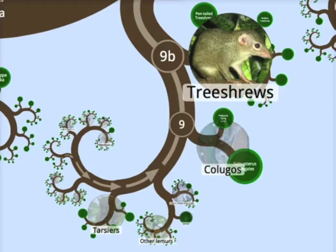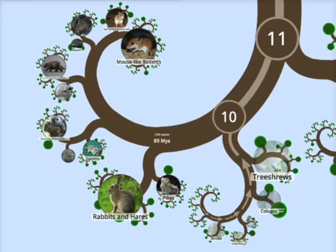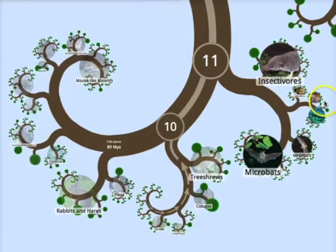The treeshrews join us as essentially the tenth rendezvous point in reality. Then the next group to join — this is a huge group — is where all the rodents join us, along with rabbits, hares, and pikas.